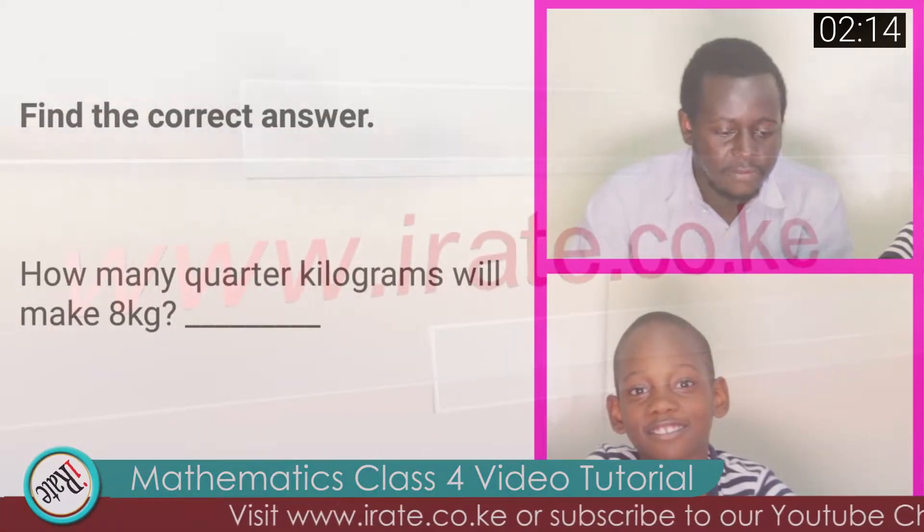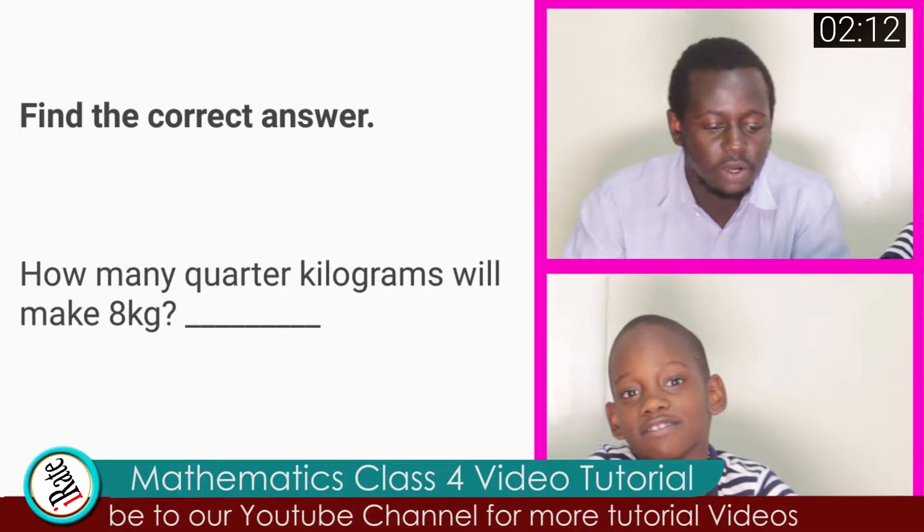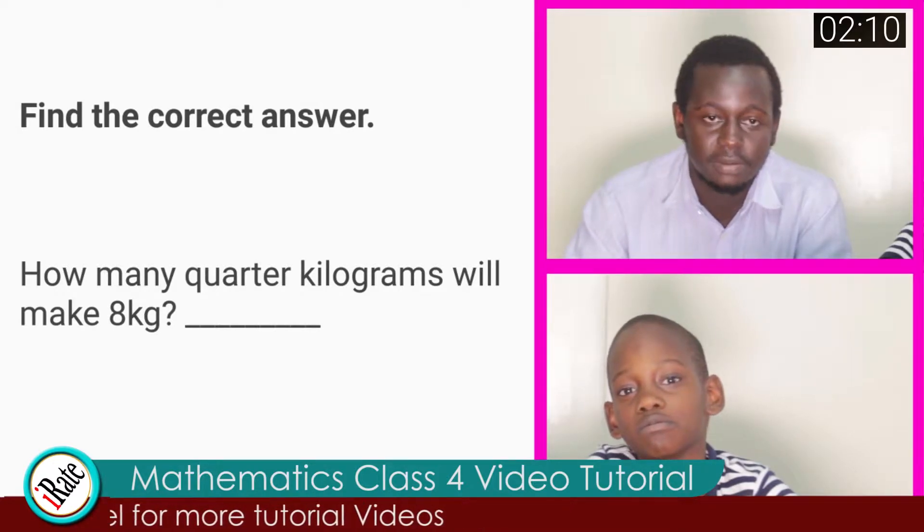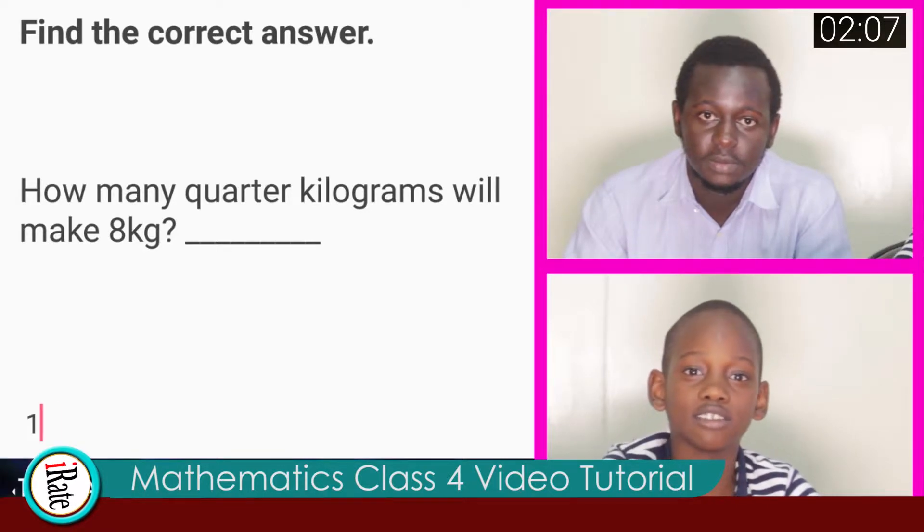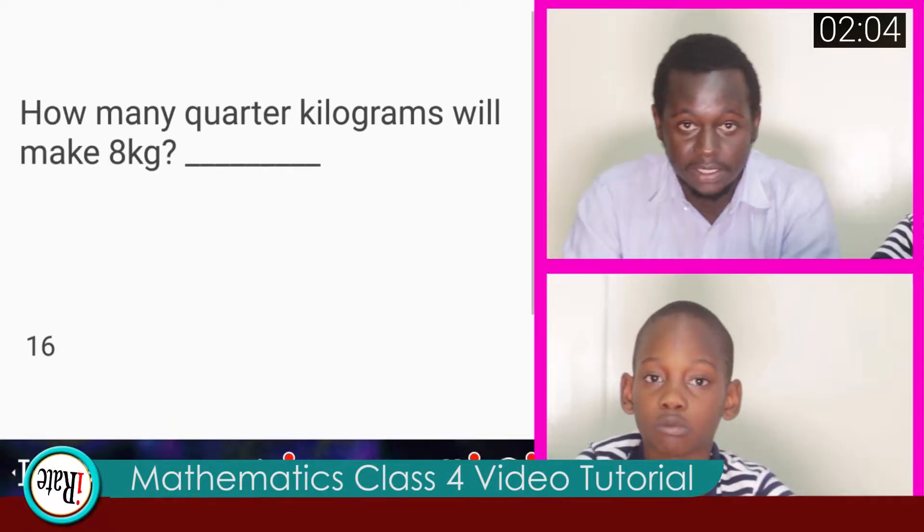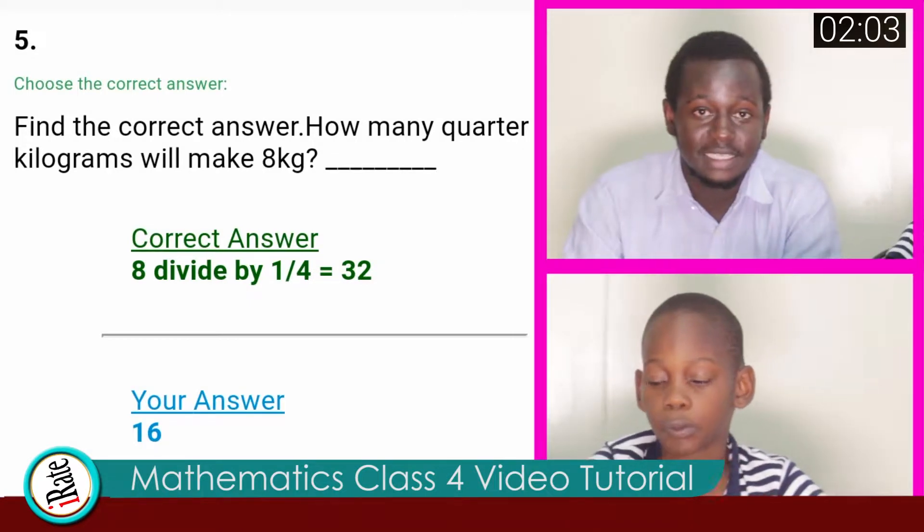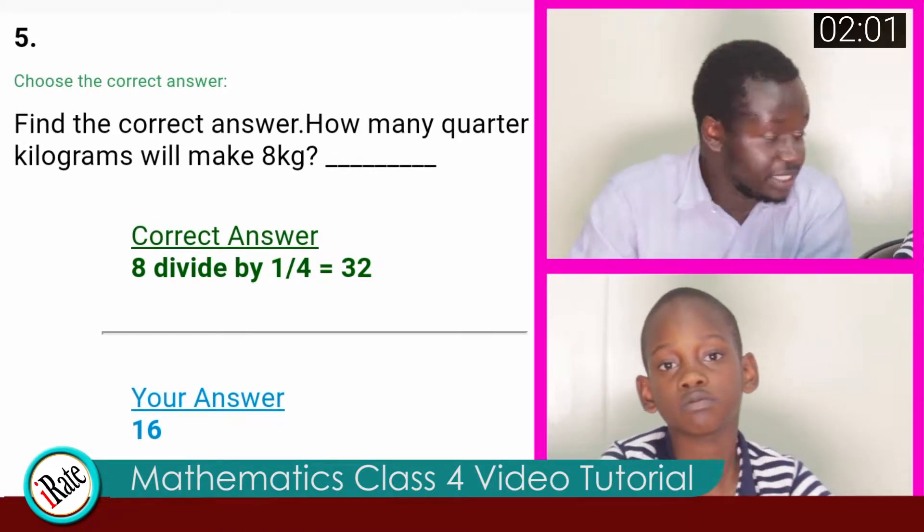Question number five. Find the correct answer. How many quarter kilograms will make eight kilograms? The answer to question number five is sixteen. That answer is incorrect. The correct answer actually is thirty-two. It is this way.